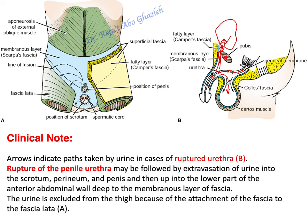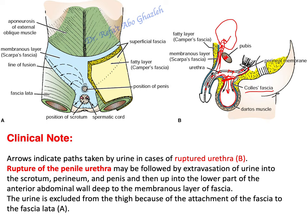Why? Because Scarpa's fascia — the membranous layer of superficial fascia — is not attached to the pubic bone, making a kind of canal or tunnel. So there is a gap, there is a tunnel, and the urine will extravasate up to the inferior part of the abdominal cavity. Also, Scarpa's fascia — or Colles' fascia — is not fused, because it is continuous as one layer through the scrotum back to the perineal body and membrane. So urine can also extravasate back toward the perineum. If there is a rupture in the penile urethra, expect to find urine in the lower anterior abdominal wall, in the scrotum, and back in the perineal area.